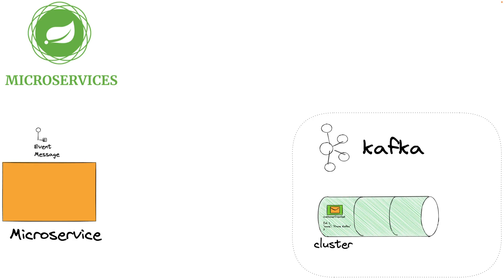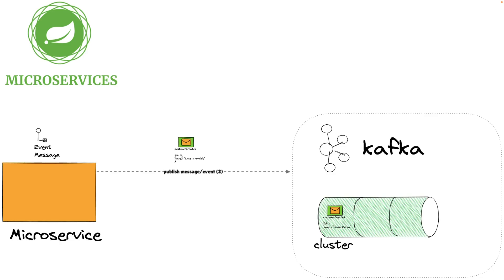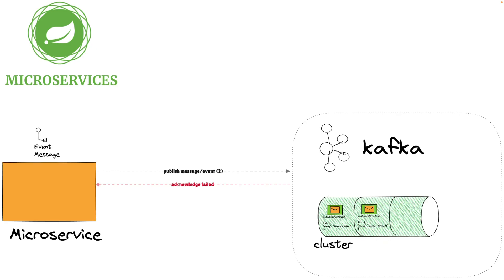Now let's suppose we have a second event to produce. Our producer sends another event to Apache Kafka — the message id is 2, it also contains a name, and the event is once again 'customer created'. Kafka will receive the message, write it to the topic, and send the acknowledgment.